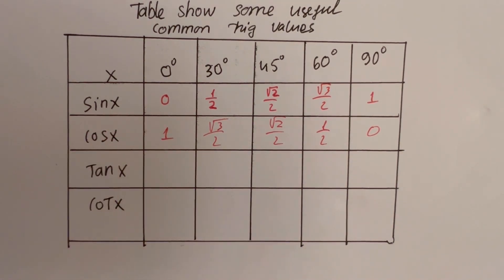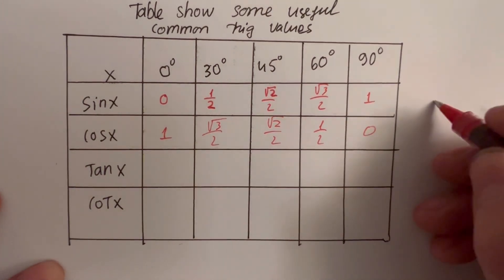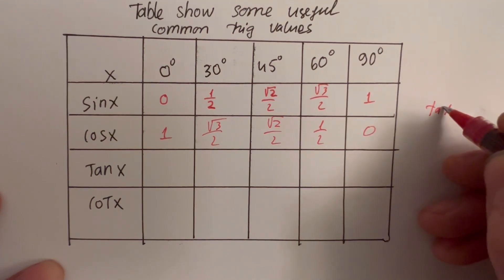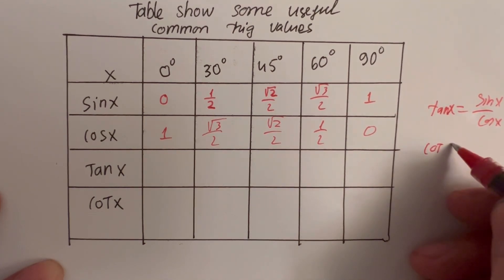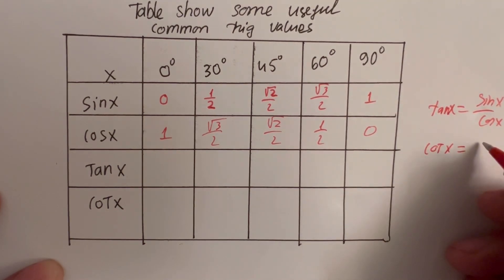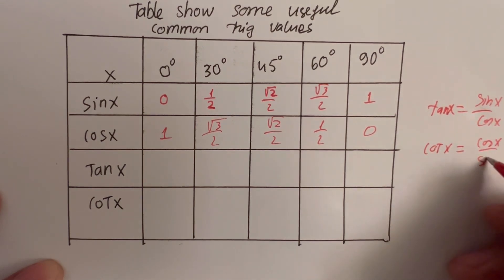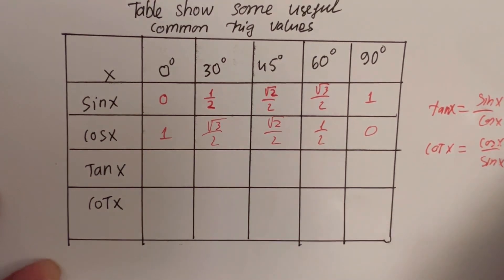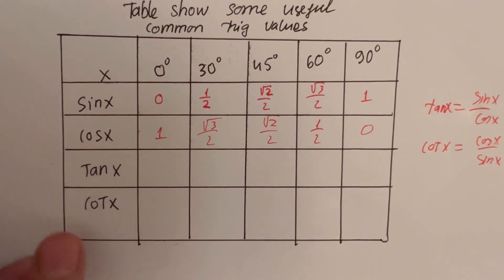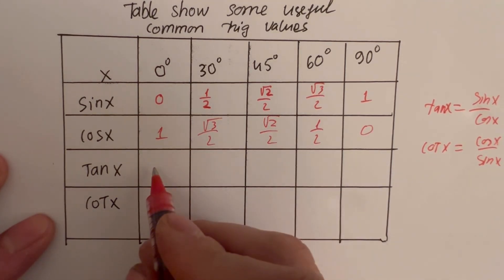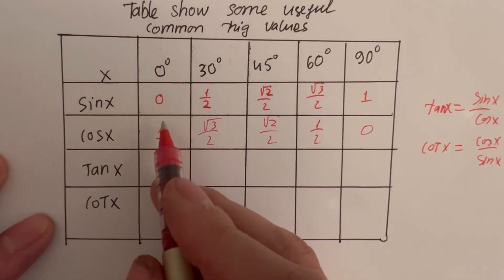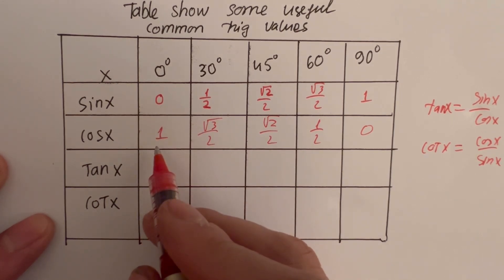And then tan — tan is easy. Tan x equals sin x over cos x, and cot x equals cos x over sin x. So when you know sin x and cos x, you can find tan x and cot x. Very easy — for example, sin x over cos x: 0/1 = 0.